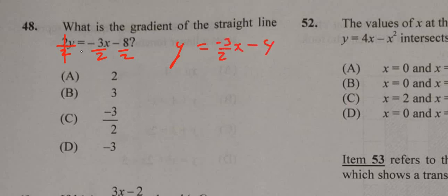And the gradient, of course, is in the form of y equals mx plus c now. So the gradient is the m, the number before the x. And the number before the x here is negative 3 over 2. So this is our gradient.